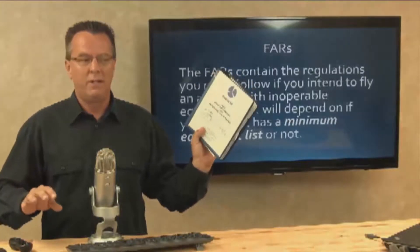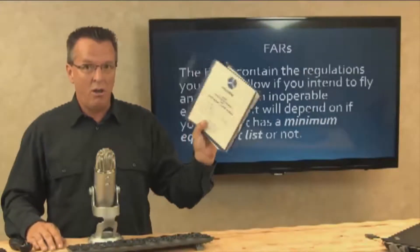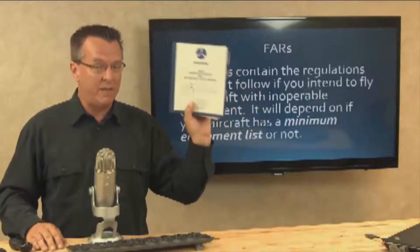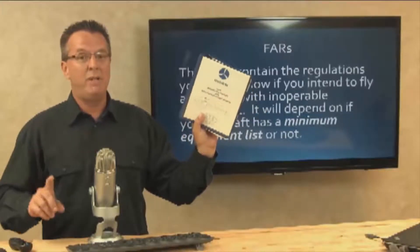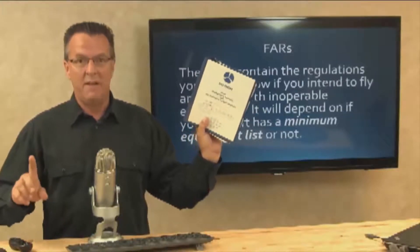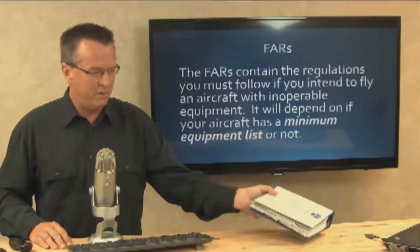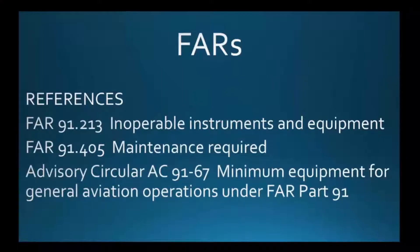So that being said, you all have an equipment list for every single aircraft in your POH — not to be confused with the minimum equipment list and master minimum equipment list. FAR references: 91.213 inoperable instruments and equipment, 91.405 maintenance required, and advisory circular AC 91-67, minimum equipment for general aviation operations under Part 91.